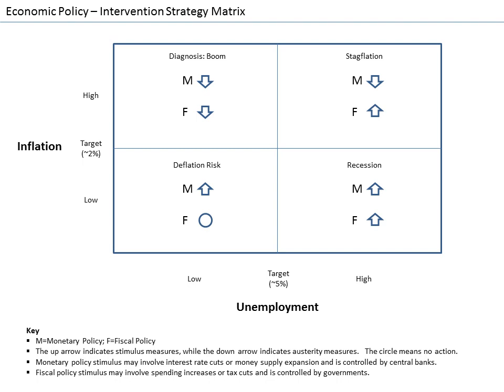Macroeconomics descended from the once divided fields of business cycle theory and monetary theory. The quantity theory of money was particularly influential prior to World War II. It took many forms, including the version based on the work of Irving Fisher: MV = PQ. In the typical view of the quantity theory, money velocity and the quantity of goods produced would be constant, so any increase in money supply would lead to a direct increase in price level. The quantity theory of money was a central part of the classical theory of economy that prevailed in the early 20th century.